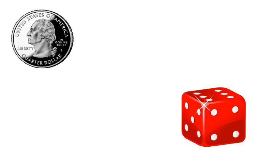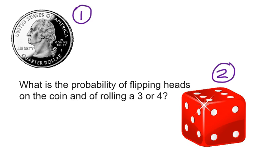Two independent events are going to occur. One is going to be the flip of a coin. The second is going to be the roll of a dice.